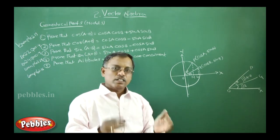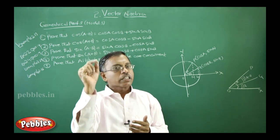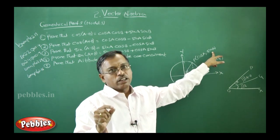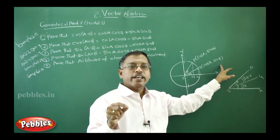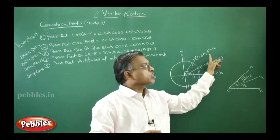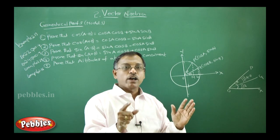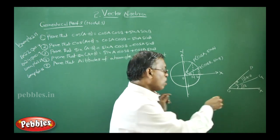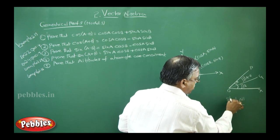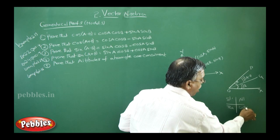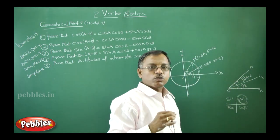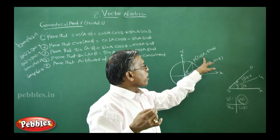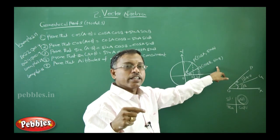you need to plot the two points P and Q in the first quadrant itself. P point, you should take it as cos A comma sin A. Next, Q point, you should take it as cos B comma sin B. But what you should understand here? Both the values are positive because in the first quadrant all the trigonometric ratios are positive. That point I already explained to you because all silver tea cups. All means what? Every trigonometric ratio is positive in the first quadrant.